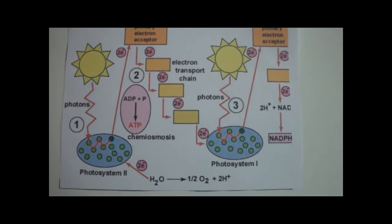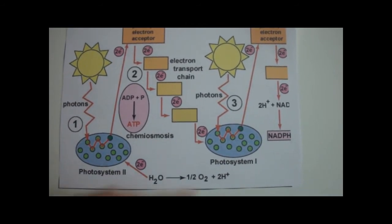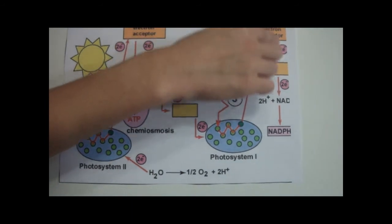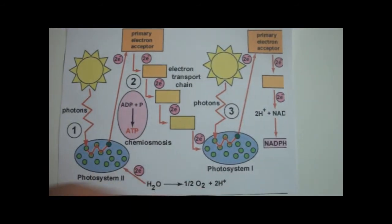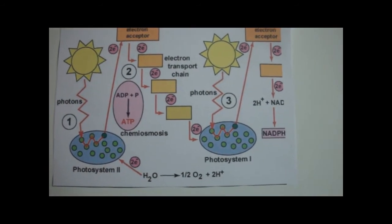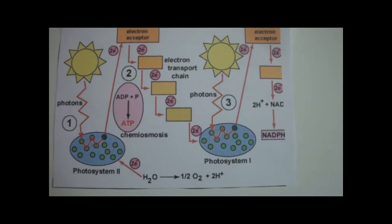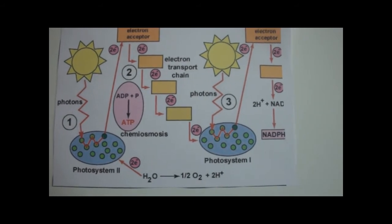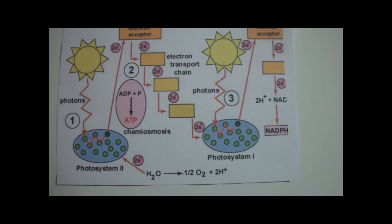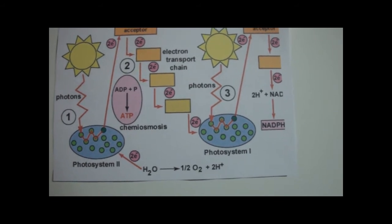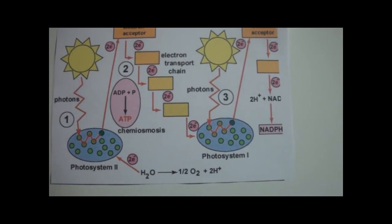The electrons then travel through photosystem 1 and into another electron transport chain. Here, the enzyme NADP+ reductase adds a hydrogen ion and two electrons onto the electron carrier NADP+ to convert it to NADPH.